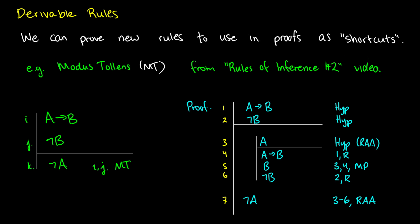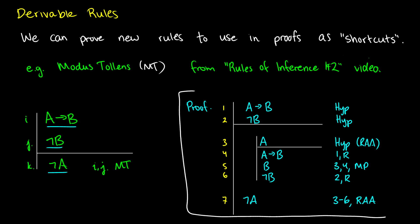For example, in the second Rules of Inference video, or the Natural Deductive Logic video, we introduced modus tollens and we proved it. Modus tollens said that if we have a arrow b, and if we have not b, then we get not a. And I've copied the proof from the other video right here.